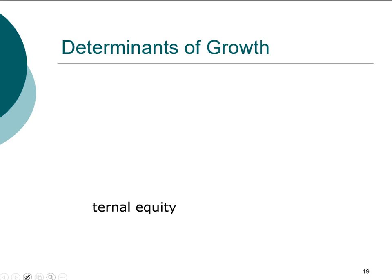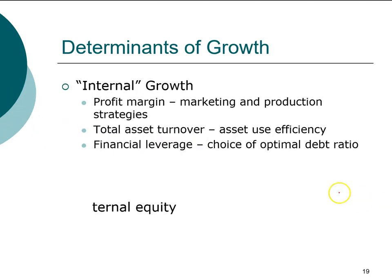In this last section we're going to talk about what determines the long-term viability of a company. Long-term viability obviously depends on its ability to grow. Looking at growth from the manager and owner's perspective, in order to grow we need funds. The key distinction is where the money comes from. If it comes internally — meaning money generated as profit by the firm — that is classified as internal growth. The determinants of internal growth are contingent upon how profitable the firm is, which depends on the marketing and production strategy of the firm.